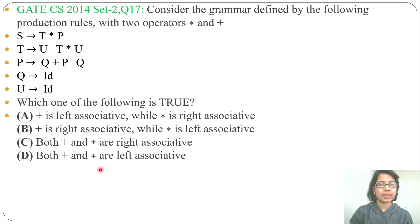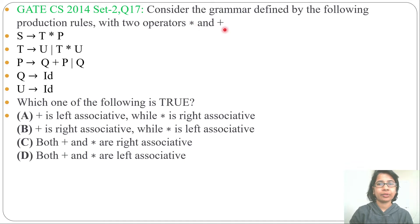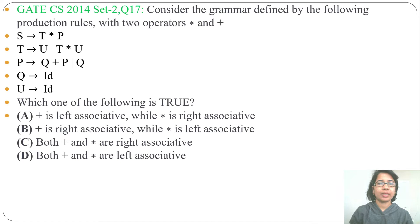The options are asking about left associative or right associative behavior of these two operators. Let's analyze the grammar and identify which one is left associative and which one is right associative. I already discussed this concept while converting ambiguous to unambiguous grammar — just go through that lecture and you can easily solve this question.